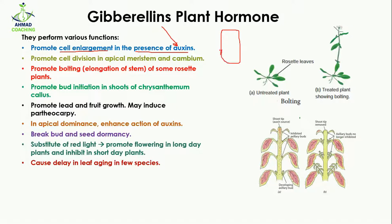Gibberellin also promotes cell division in the apical meristem and cambium. Apical meristem means the top part of the shoot — the region where cells are actively dividing. Gibberellin promotes cell division in this apical region, causing the stem to increase in length, and it also promotes cell division in the cambium.